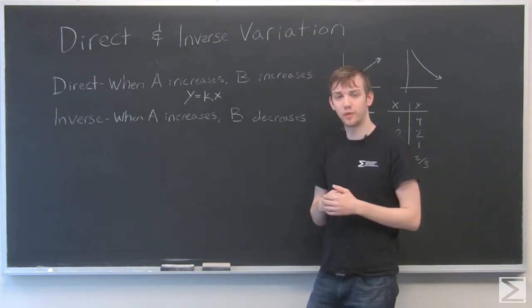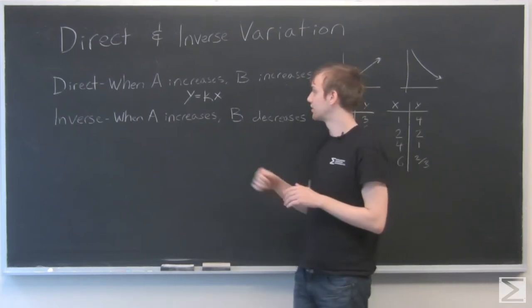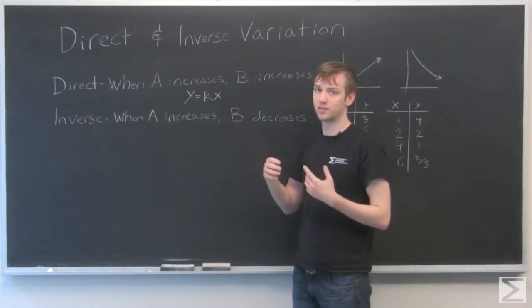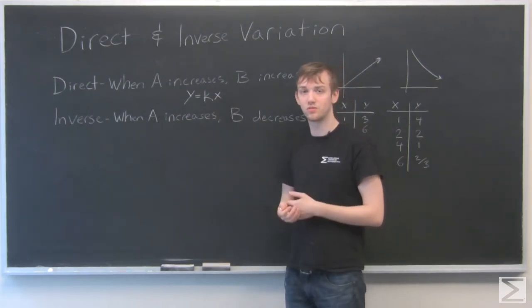In another video, we talked about rate problems. And rate is a form of direct variation. As you can see, the distance formula, distance equals rate times time, is basically the same as this direct variation formula.